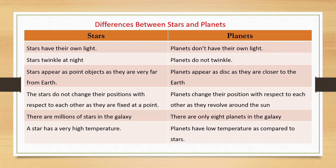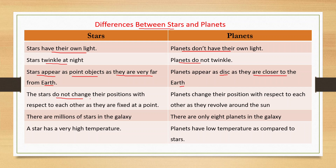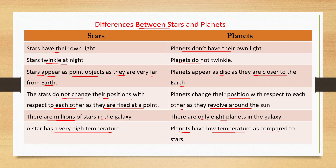Stars have their own light; planets do not. Stars twinkle at night; planets do not. Stars appear as point objects as they are very far from Earth; planets appear as disks as they are closer to the Earth. Stars do not change their positions with respect to each other. Planets change their position as they revolve around the sun. A star has a very high temperature; planets have lower temperatures compared to stars.